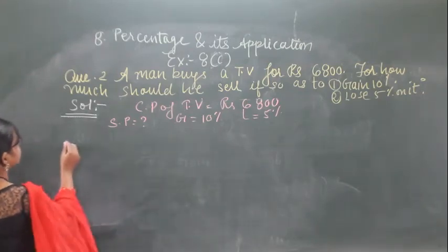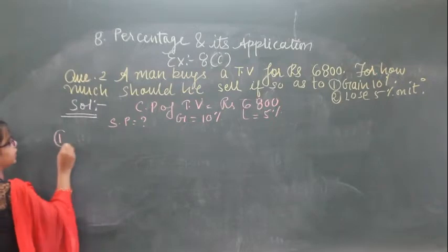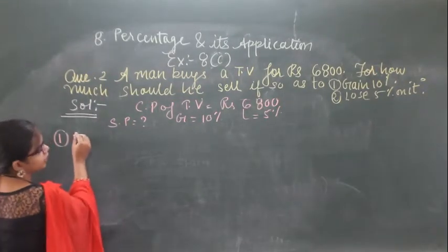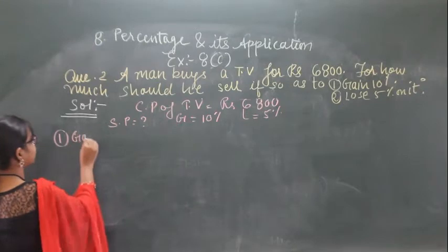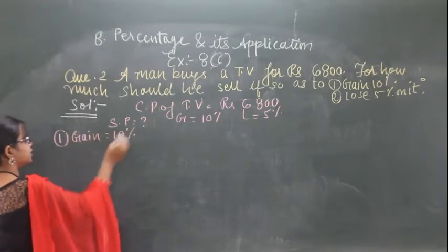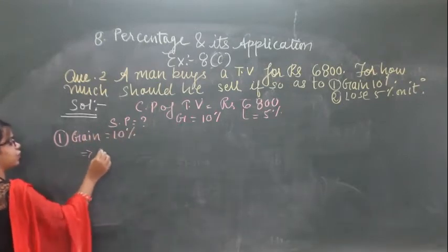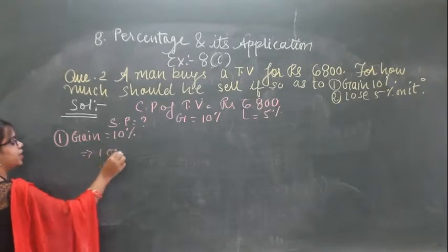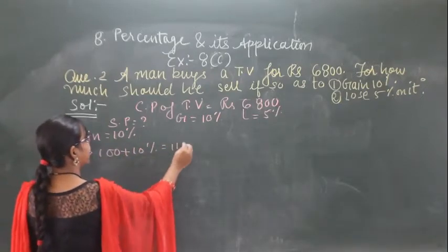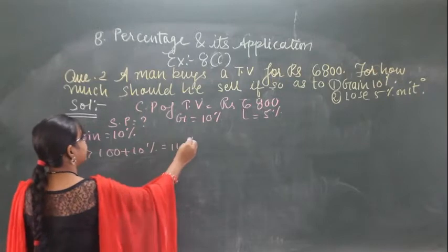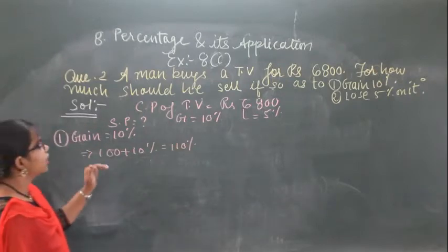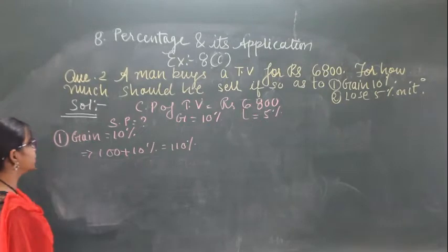For the first condition, gain is given as 10%. So 10% means it comes from 100. 100 plus 10 equals 110. So gain is 110%.